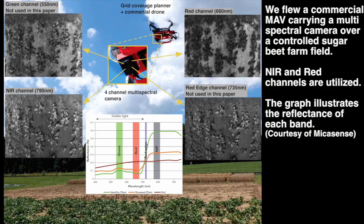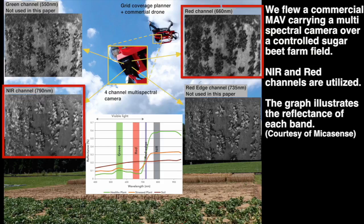A DJI Mavic flies over our experimental field with a 4-band multi-spectral camera. Although this camera can capture up to 4 bands, we consider only NIR and RED channels due to difficulties in registering images from other bands.